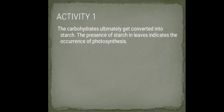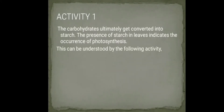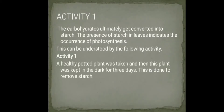The carbohydrates produced are ultimately converted into starch, and the presence of starch in the leaves indicates the occurrence of photosynthesis. To demonstrate this, we use a healthy potted plant.